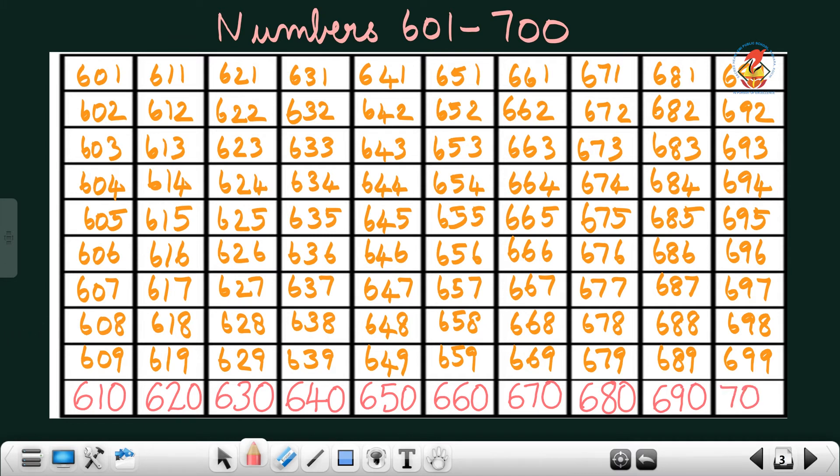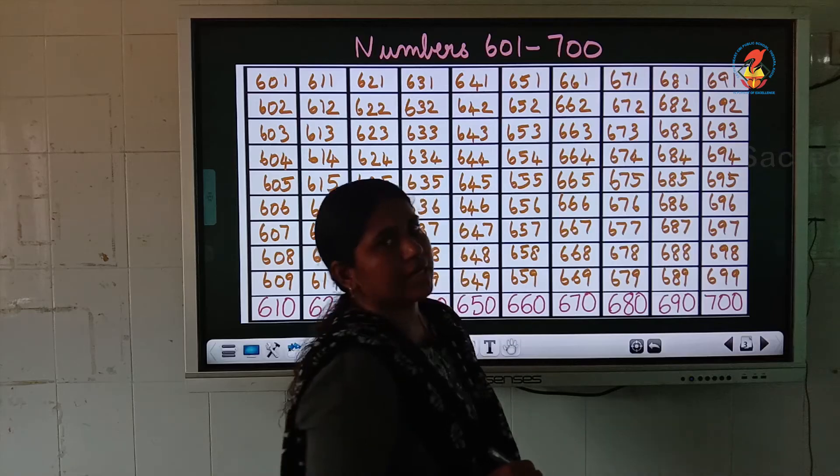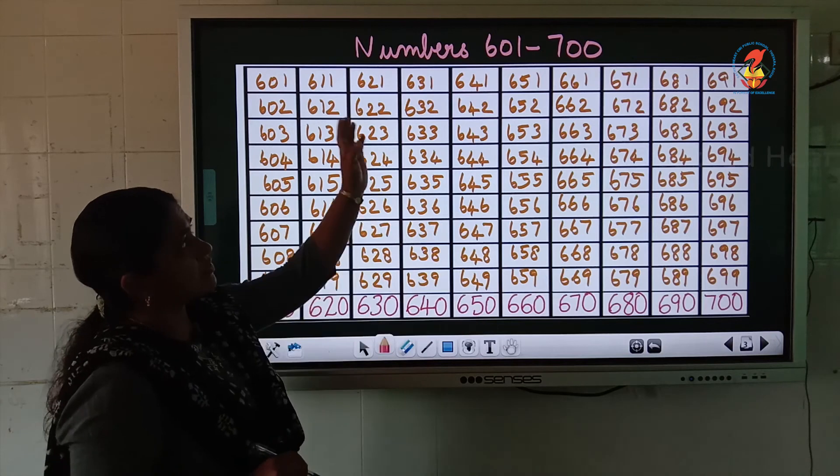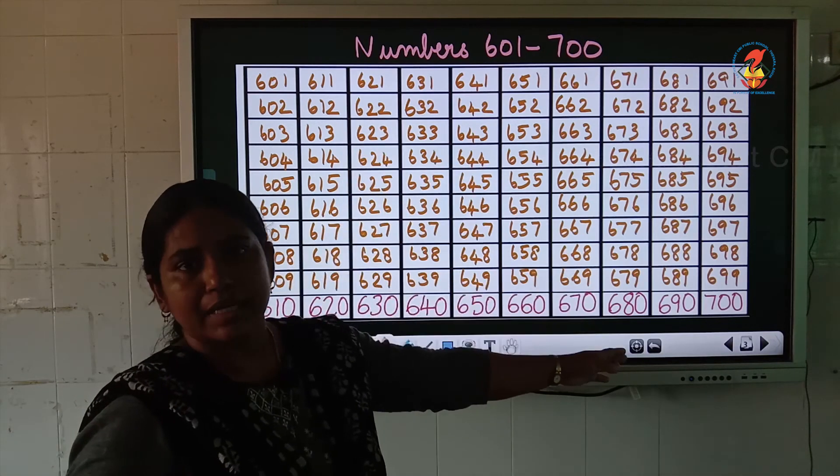700, 7, 0, 0. Okay children, now we finish the numbers from 601 to 700.